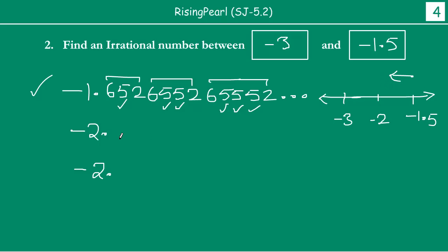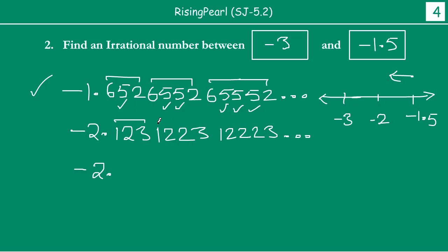Now let us write a second irrational number starting with minus 2 point something. We can write minus 2.123, then 1223, then 12223, and so on — increasing the number of 2s in each unit. In the first unit there is one 2, in the second there are two 2s, in the third there are three 2s. So this is another irrational number between minus 3 and minus 1.5.